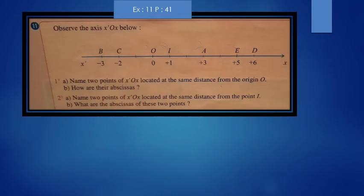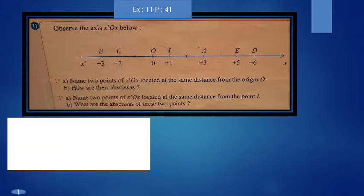Now, let's solve exercise 11. Observe the axis x'Ox below. Name two points of x'Ox located at the same distance from origin O. Here, this is the origin. Having the same distance, I can see I is at 1. There is nothing opposite to it. We can make things easier by writing here plus 2, plus 4.